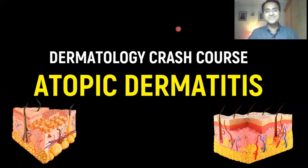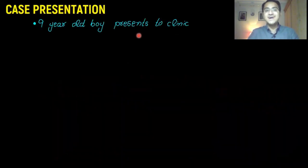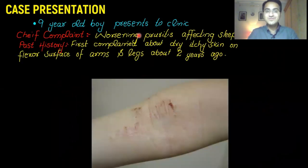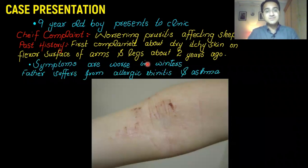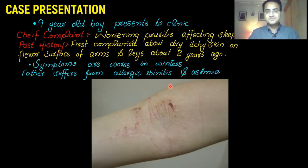In our dermatology crash course video series, we'll be talking about atopic dermatitis, also called eczema. We have a case here: a nine-year-old boy presents to your clinic with the chief complaint of worsening pruritus that is affecting his sleep and school. Past history is significant that the patient first complained about dry itchy skin on the flexor surface of arms and legs about two years ago. Symptoms are usually worse in winters, and family history shows that the father also suffers from allergic diseases like allergic rhinitis and asthma.